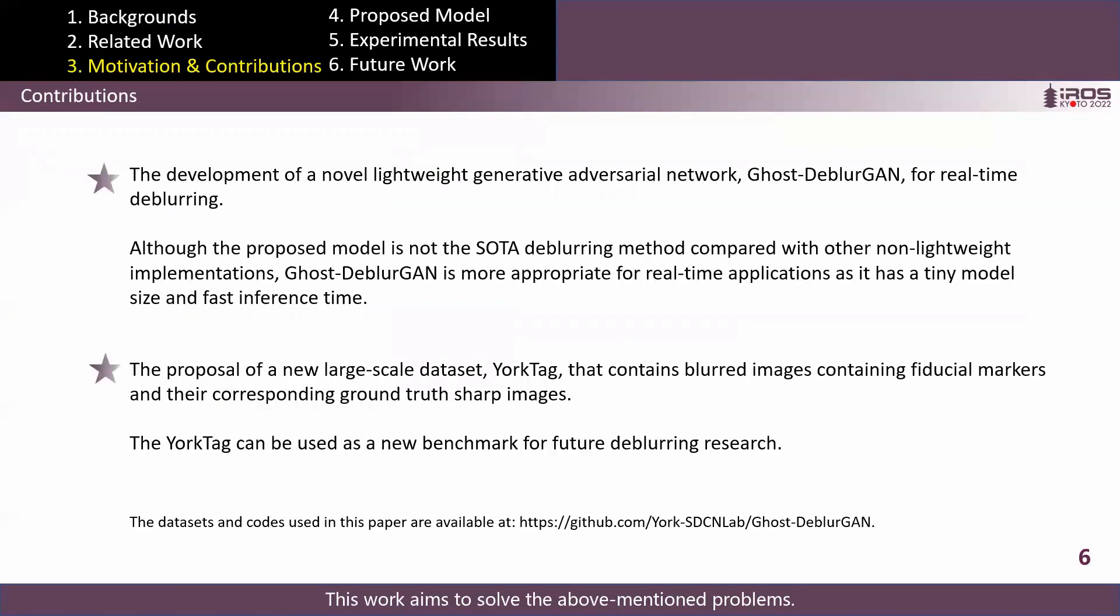This work aims to solve the above-mentioned problems, and the contributions of this paper are summarized as follows. First, we develop a novel lightweight generative adversarial network named GhostDeblurGAN for real-time deblurring. Second, we propose a new large-scale dataset, YorkTag, that has blurred images containing fiducial markers and their corresponding ground-truth sharp images.